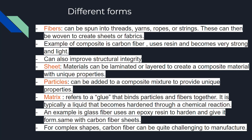Sheet materials can be laminated or layered to create composite materials with unique properties. Particles can be added to a composite mix — for example, concrete uses particles such as sand, water, gravel, and cement, all mixed in a truck. A matrix acts like glue that binds the particles and fibers together. It is typically liquid — a very famous one is epoxy resin, used in the airline industry. It hardens and bonds for complex shapes, though carbon fiber can be quite challenging to manufacture.